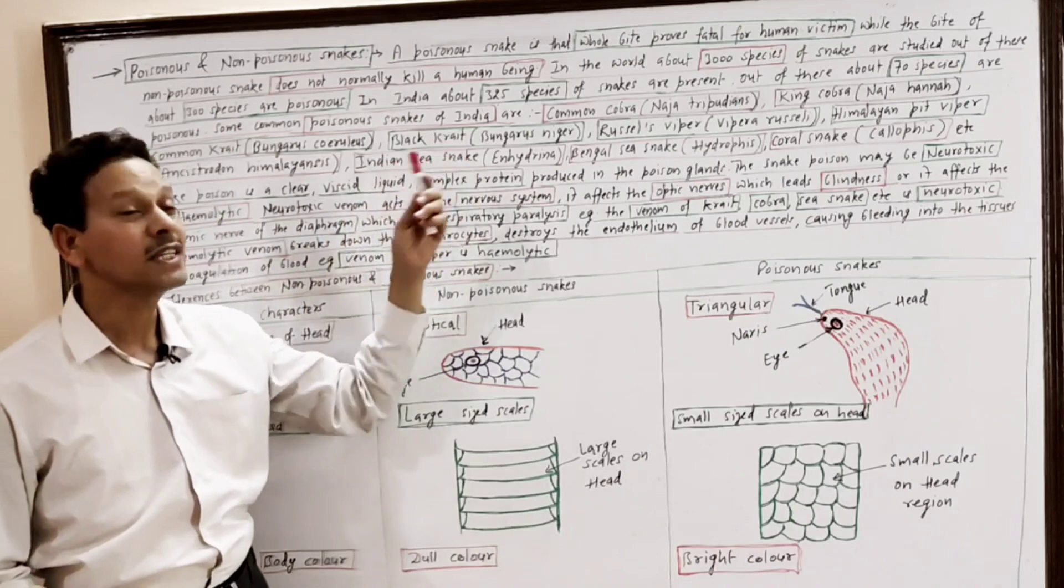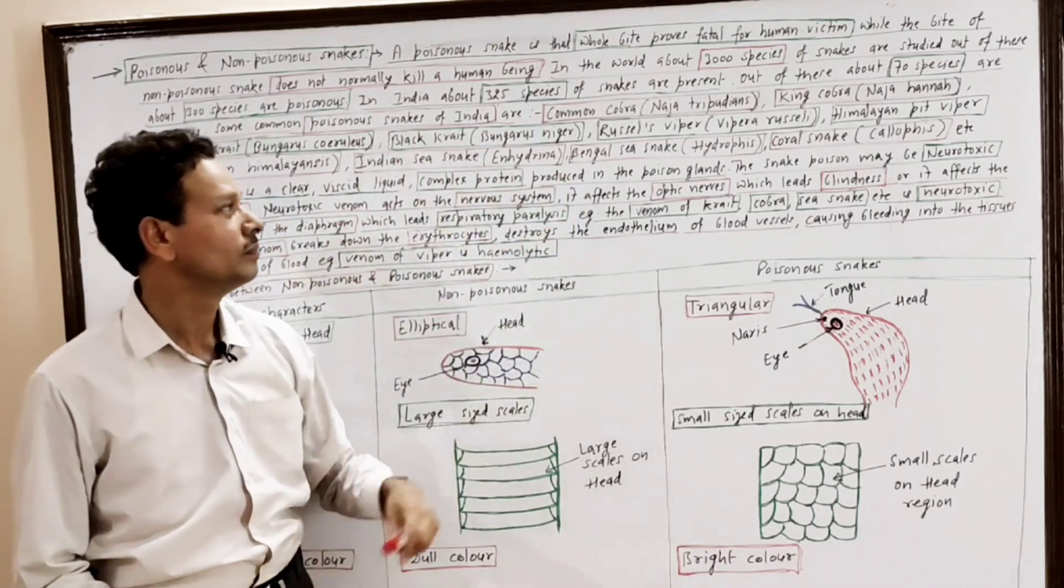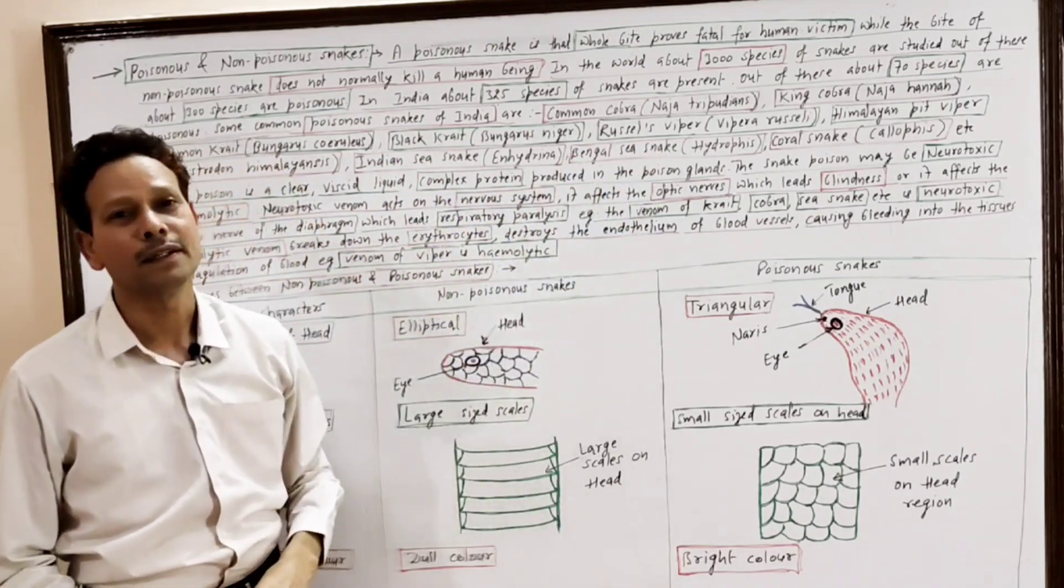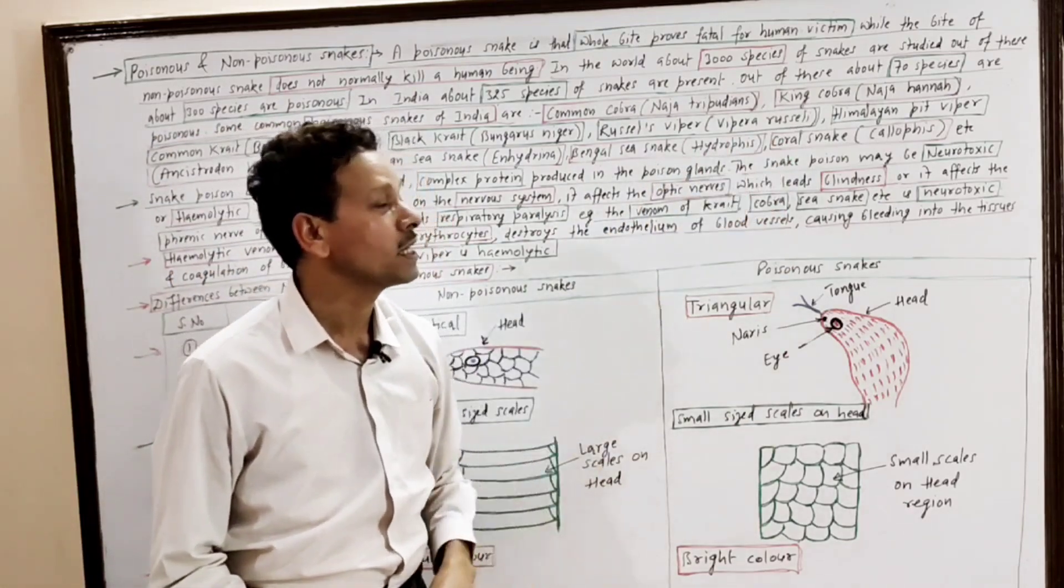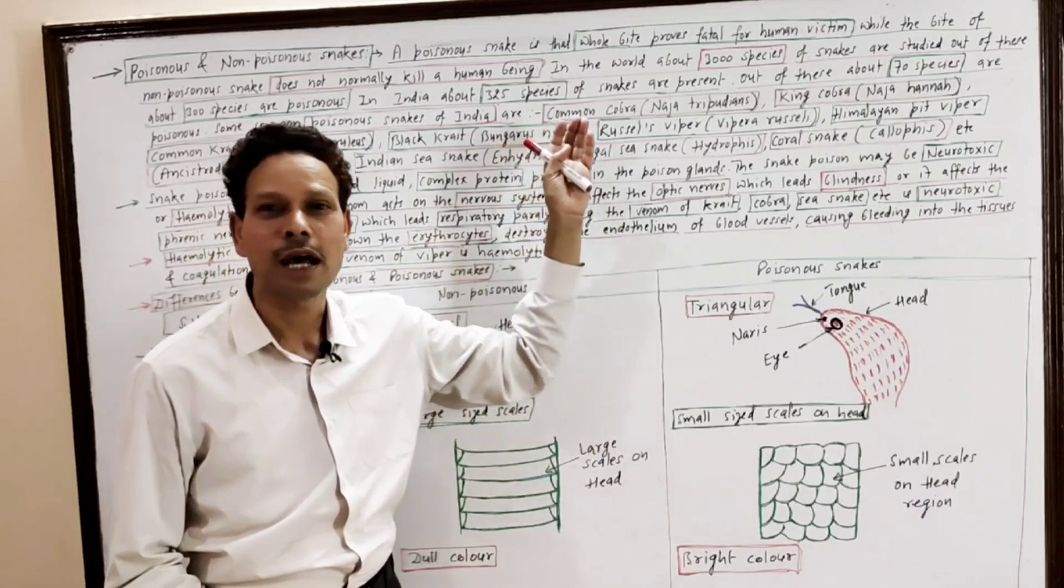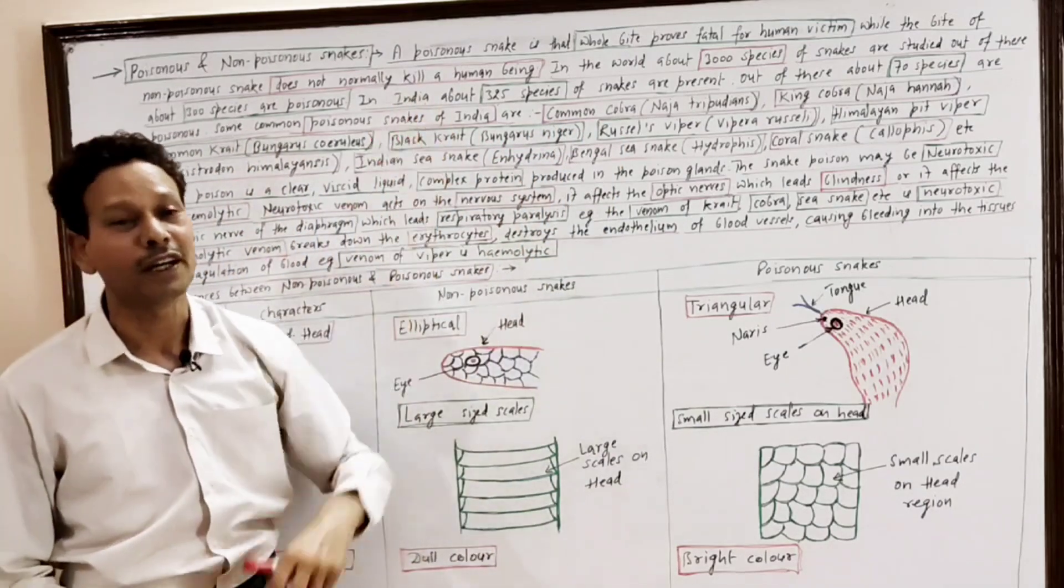Indian sea snake, Anhydrina. Bengal sea snake, Hydrophyses. Coral snake, Callophyses. These are some common examples of poisonous snakes of our country India.